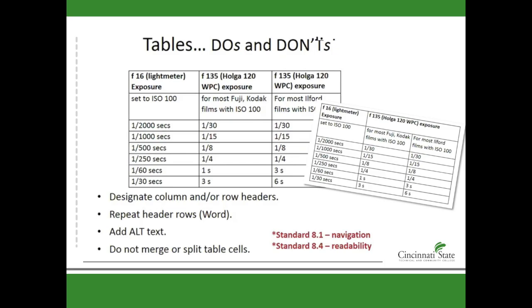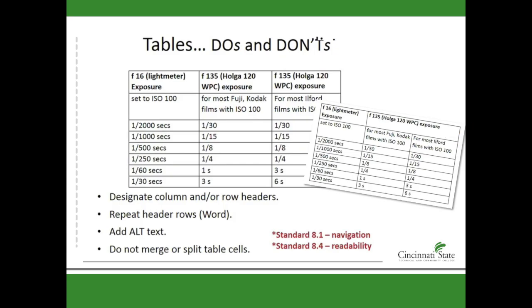So here are some do's and don'ts when it comes to formatting your document using tables. What you want to do is designate column or header rows — each one of these has a header 1, 2, and 3, and those are selected and then formatted properly, just like in your Word document or PowerPoint by using the header, title, and subheader function. You also want to repeat your rows, and you do not want to merge or split table cells. For instance, this row was combined — these two rows were made into one header — but a screen reader would not be able to convey that information properly.